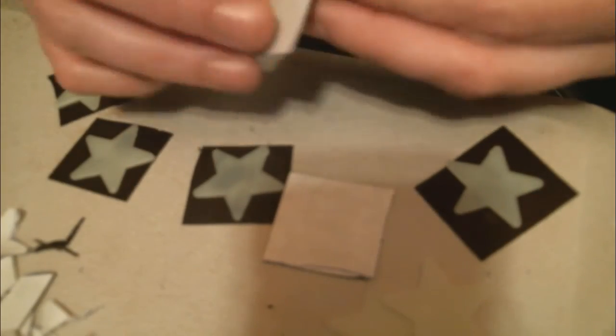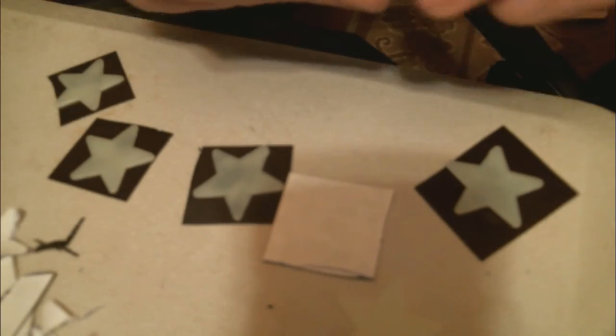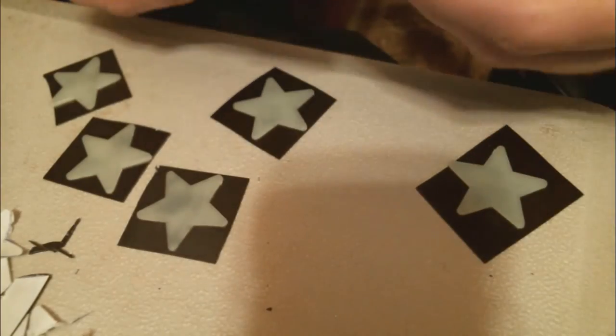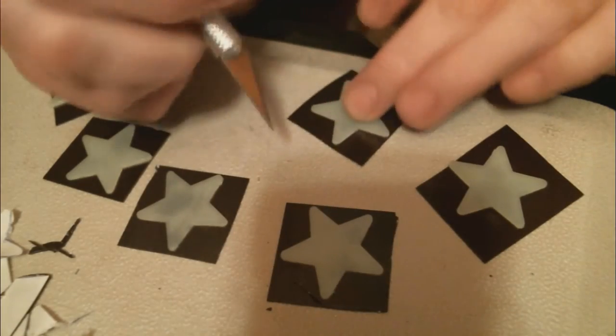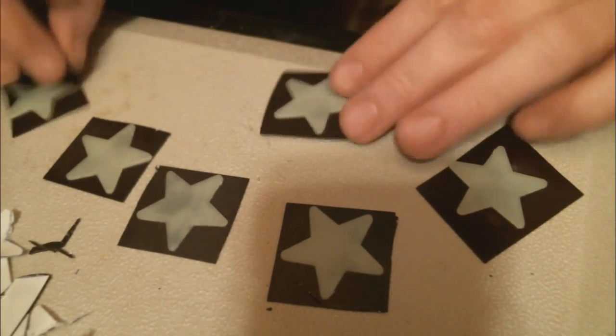Then you're going to take your exacto knife or your scissors again and you're just going to trim off the excess like we did before with the first method, but this time you're going to be cutting more off than what you did.